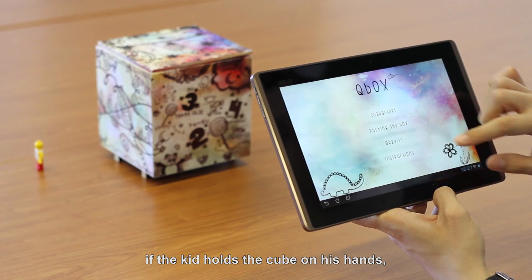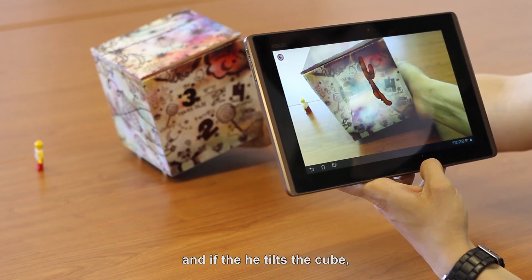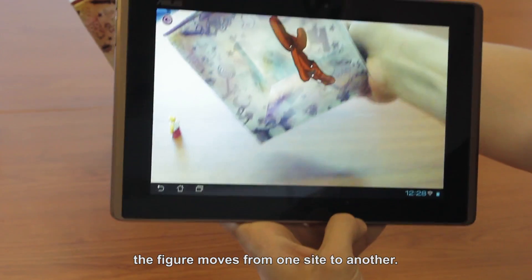Moreover, if the kid holds the cube in his hands, the gravity effect acts over the figure and if he tilts the cube, the figure moves from one side to another.